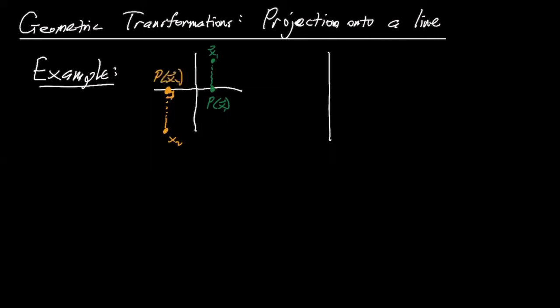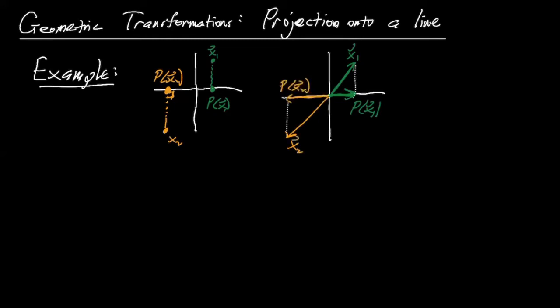In vector terms, x1 is a vector and its projection is like the shadow of the vector if you shine a light from directly above. Similarly for x2, that would be like shining a light from below, and its projection lands on the x-axis like that. You're projecting it down onto the line.